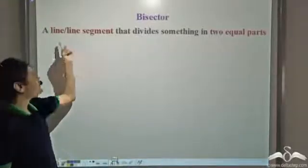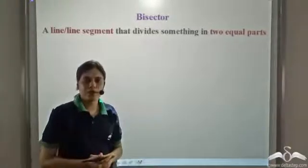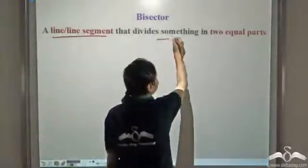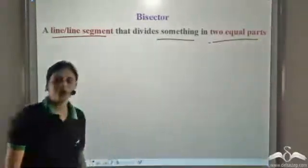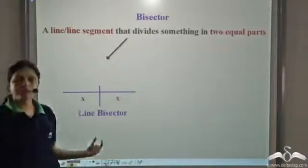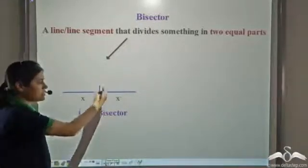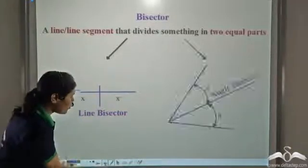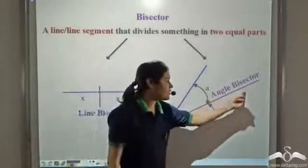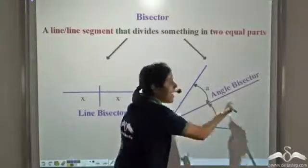A bisector is a line or a line segment that divides something into two equal parts. A bisector could divide a line segment — then it is called a line bisector. Or it could divide an angle into two equal parts — then it is called an angle bisector.